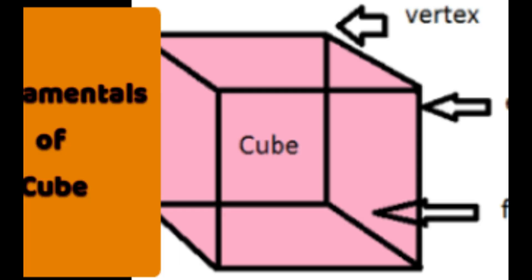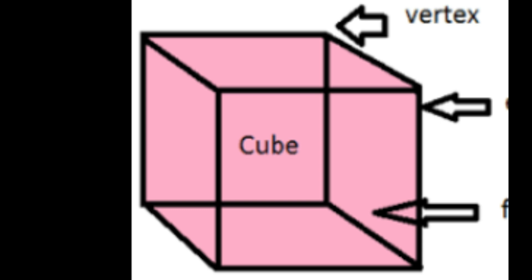This is a representation of a cube. The first part is the vertex, or in simple words, the corner. How many such corners are there for one cube? There are eight corners.